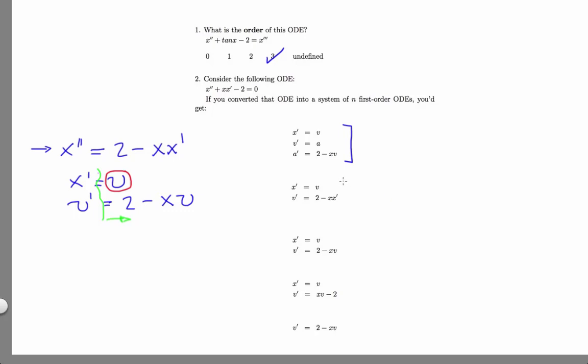This set of equations is almost right, except for this term right here. Remember, we want no derivatives on the right-hand side of the equal signs. This is the right answer. This one has a sign problem, and this one doesn't have the helper variable in it, so it's not complete.